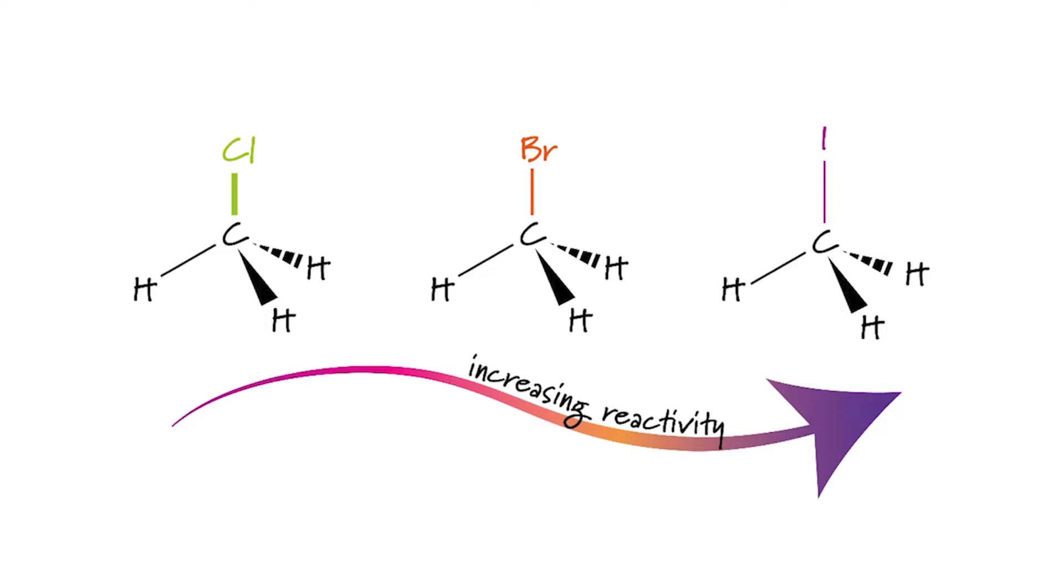Let's start with electronegativity. Chlorine is considerably more electronegative than carbon. We have a distinctly polar bond there. Bromine is slightly more electronegative than carbon. Carbon and iodine, there isn't a great deal of difference between their electronegativities.